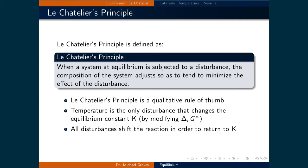The only way that K itself is modified is through changes in temperature, since temperature is the only variable in the definition of K.